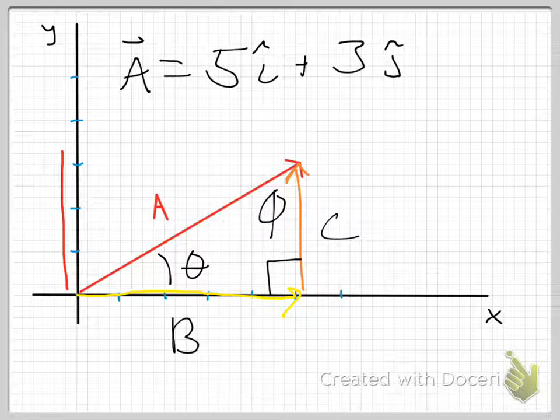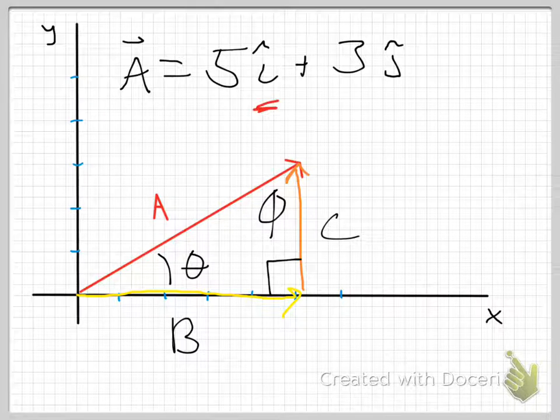And then we talked about unit vectors, which are very special vectors that lie along axes, and they have a magnitude of 1. In this case is my i-hat, which is my unit vector in the x-direction, and my j-hat, which is my unit vector in the y-direction.